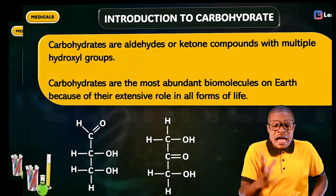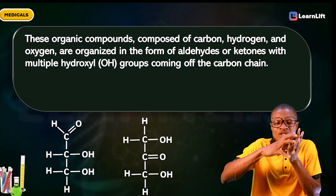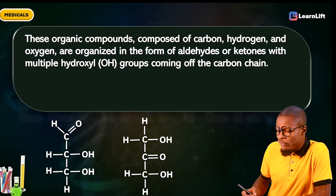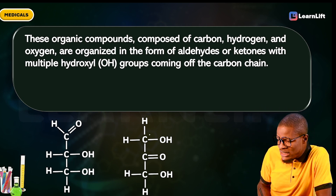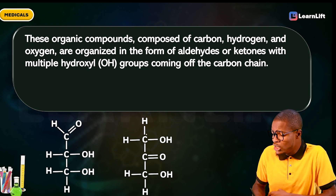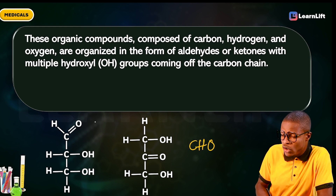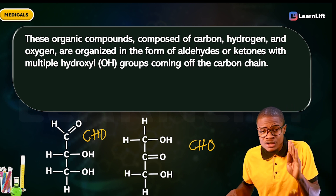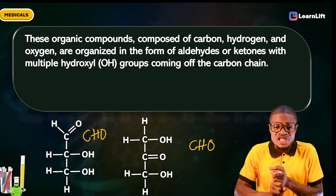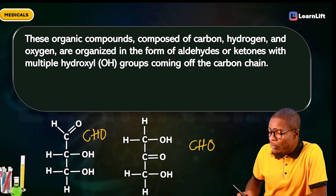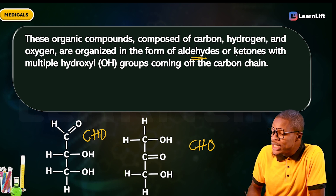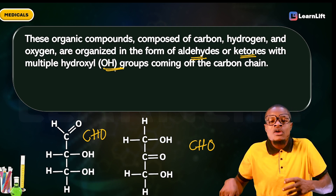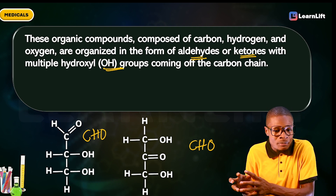Carbohydrates are organic compounds. Looking at their structure, you can see they are composed of just three elements: carbon, hydrogen, and oxygen. All carbohydrates on earth contain just these three things — carbon, hydrogen, and oxygen — organized in either the form of aldehydes or ketones, and they must have multiple hydroxyl groups coming off the carbon chain.